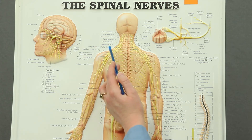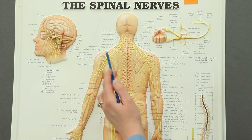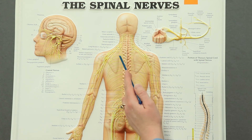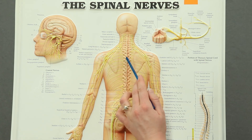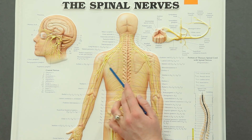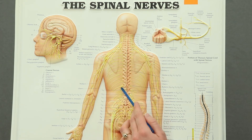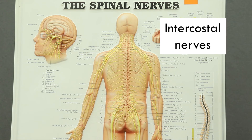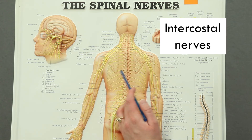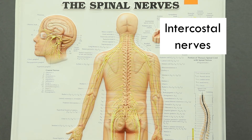Those are the major spinal nerves of the upper extremity. Moving a little farther down, we see all of these nerves coming off of the thoracic region of the spinal cord. These are the intercostal nerves. The intercostal nerves will innervate the external and internal intercostal muscles, as well as the abdominal muscles — rectus abdominis, the internal and external abdominal obliques, and transversus abdominis.